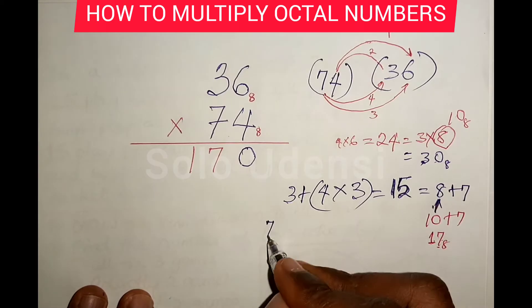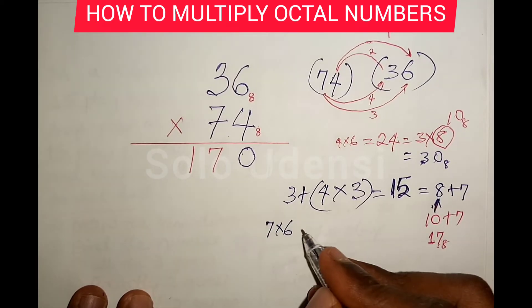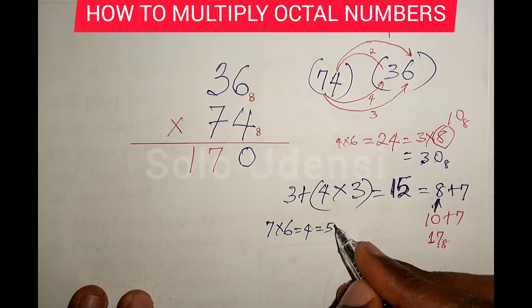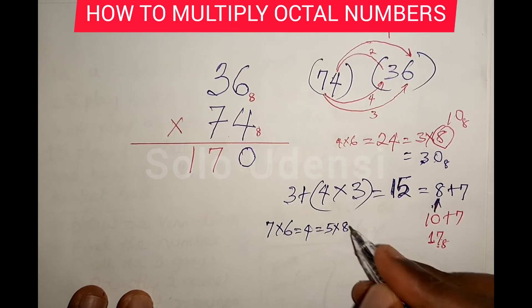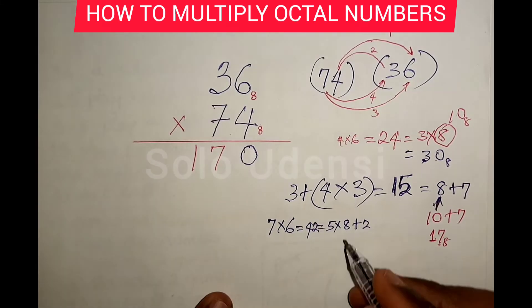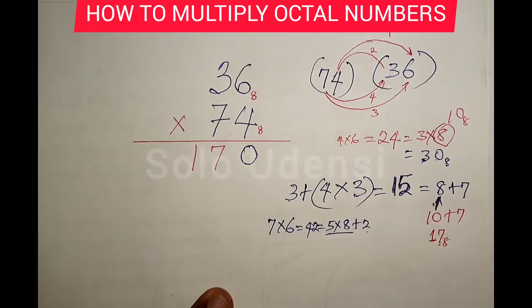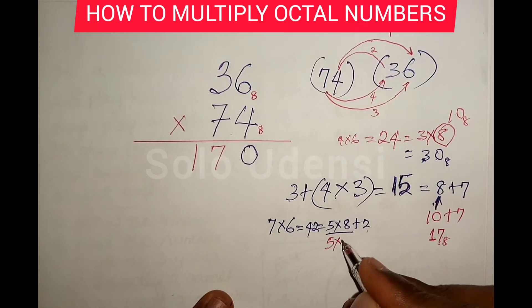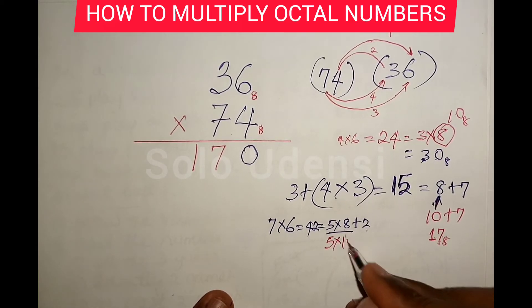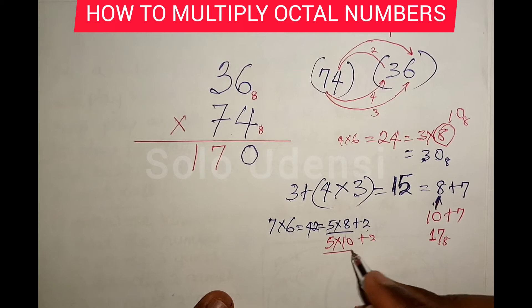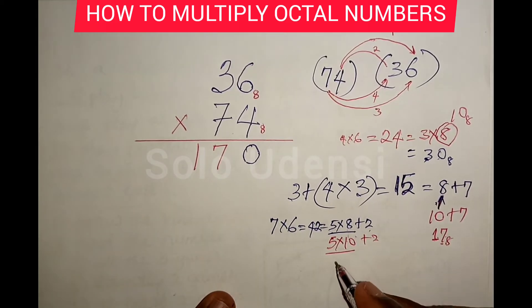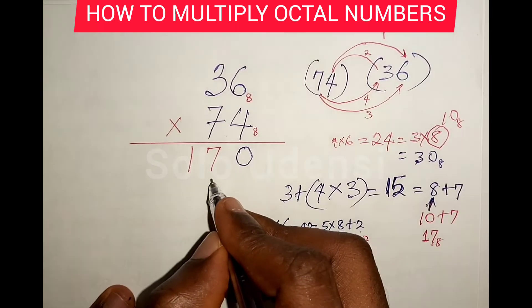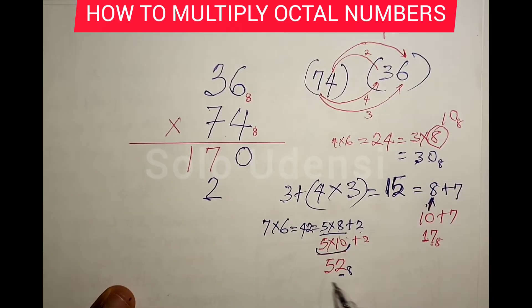Then seven times six is forty-two. And forty-two is five times eight plus two. Five times eight is forty plus two, that is what we mean. So we have five times one zero plus two, which is fifty-two in base eight. So we write two here and carry five.